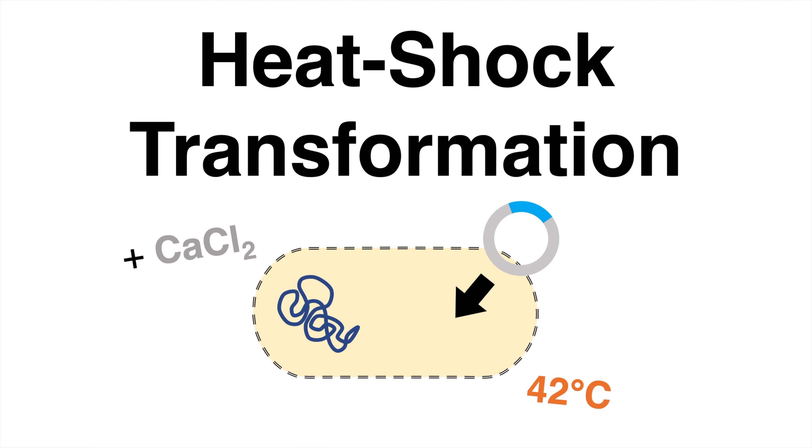The heat shock transformation protocol is a basic technique in molecular biology which enables bacterial cells to take up circular plasmid DNA from the surrounding environment.